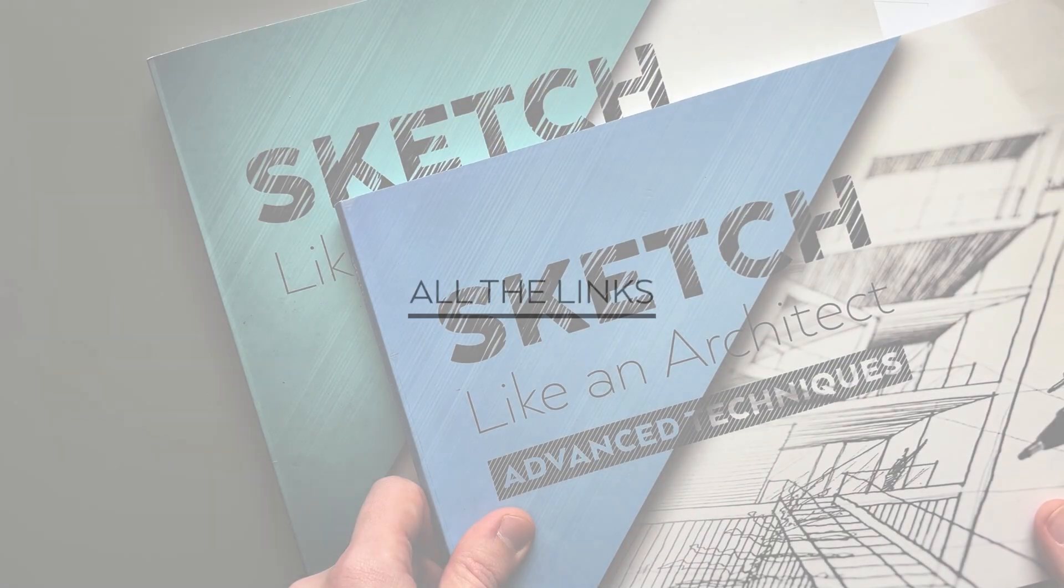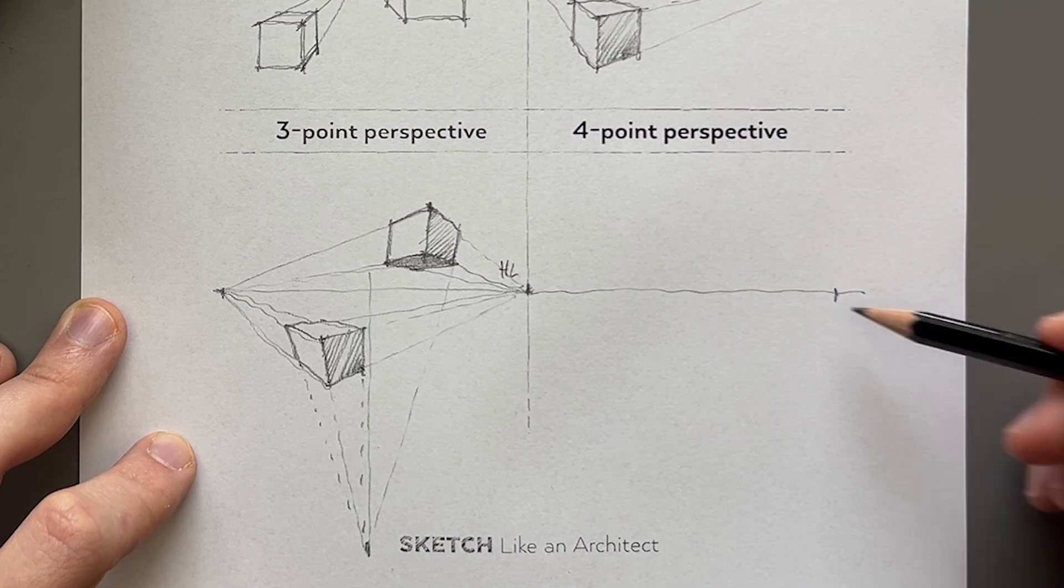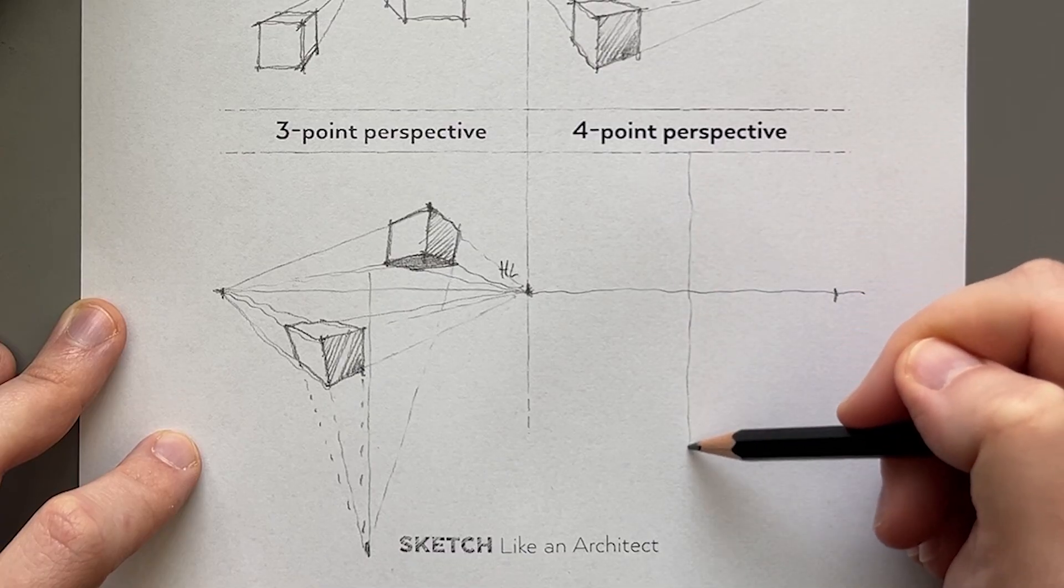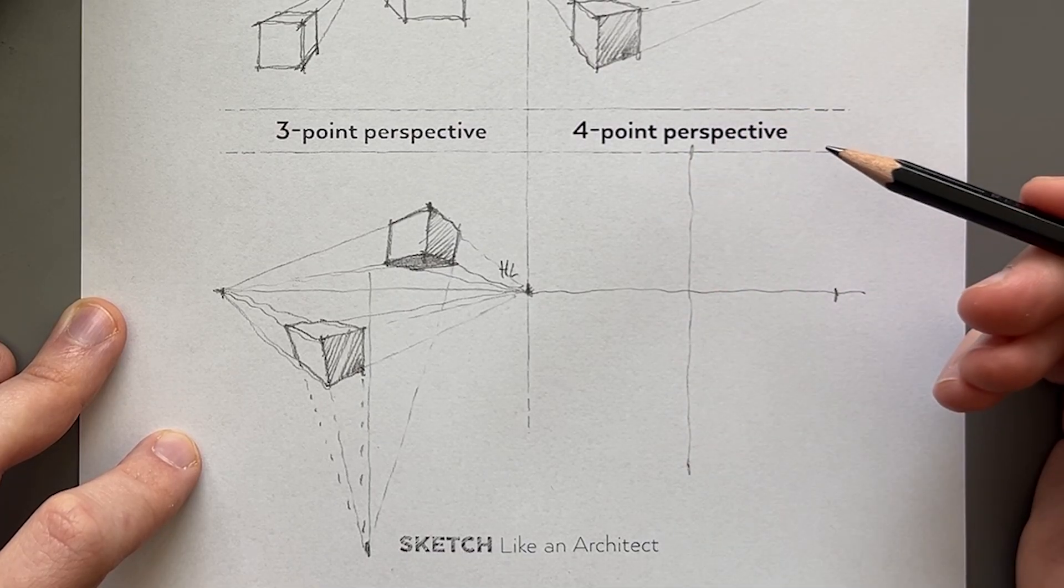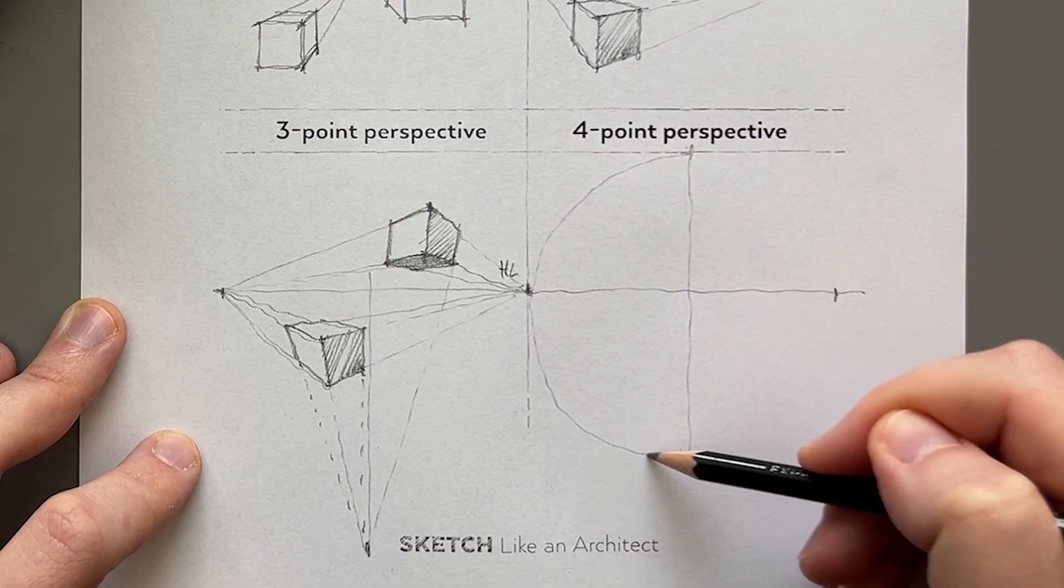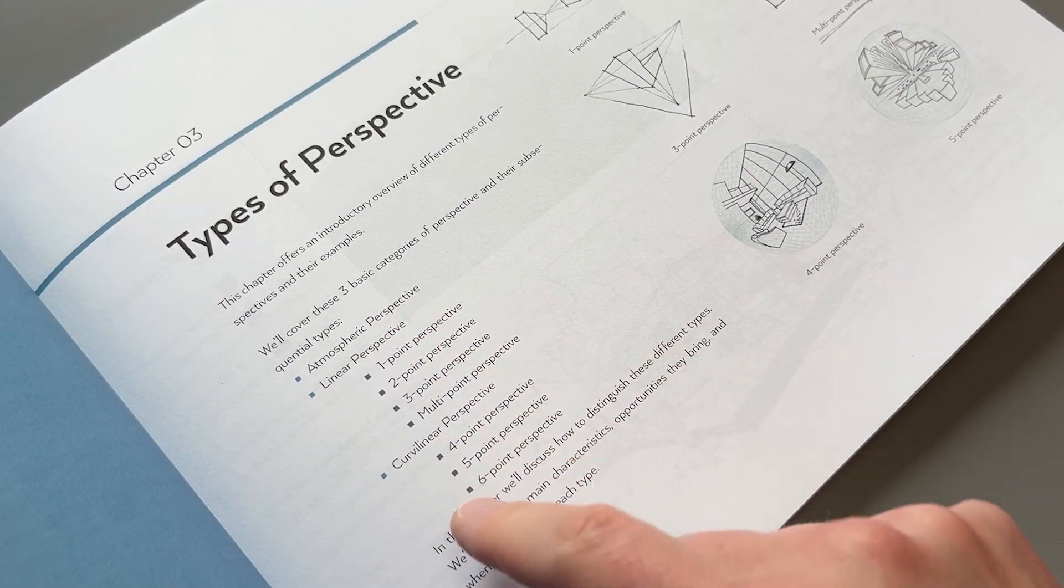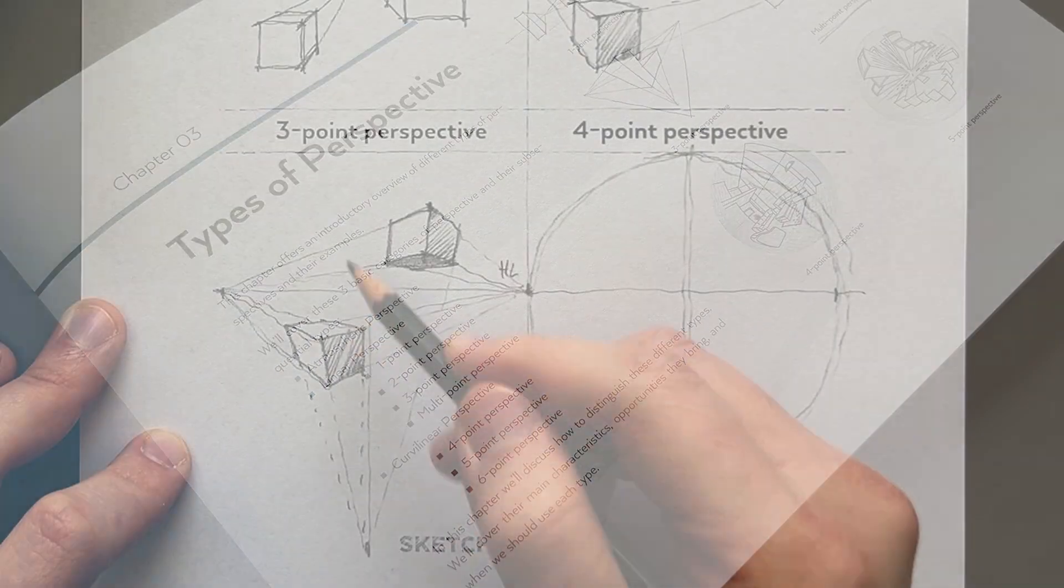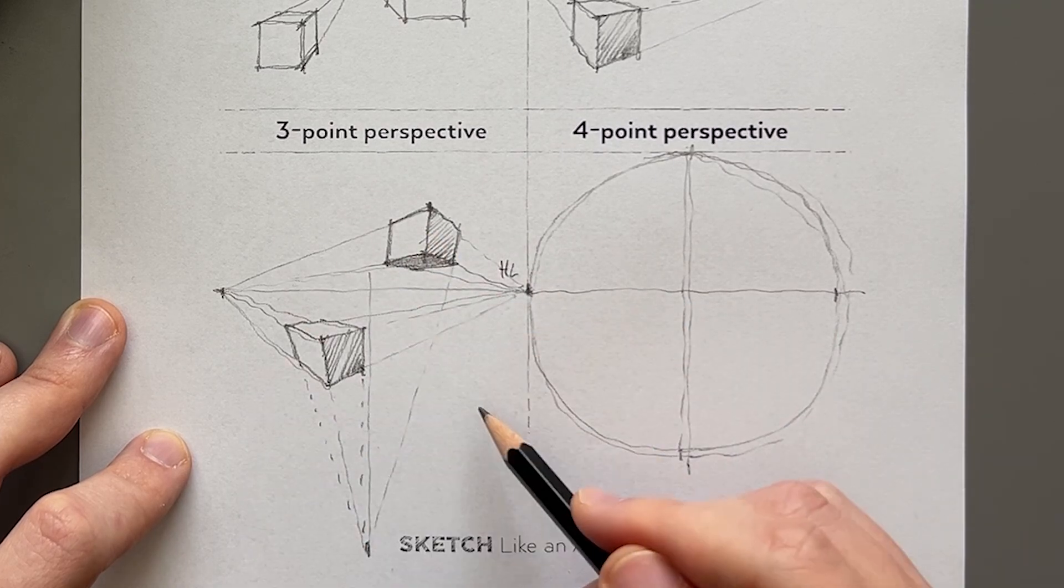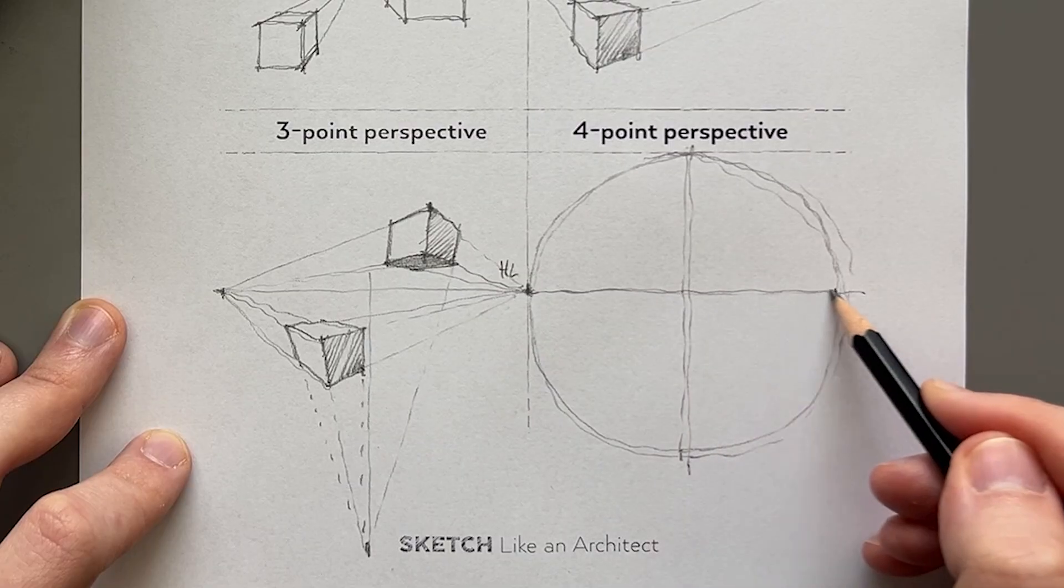Now with the four-point perspective, we are moving away from linear perspective into curvilinear. There are different ways how to go about this one, but I like to start with a simple circle. Moving from linear to curvilinear perspective means that we are not using straight lines only in the perspective grid, but we're also introducing curves.